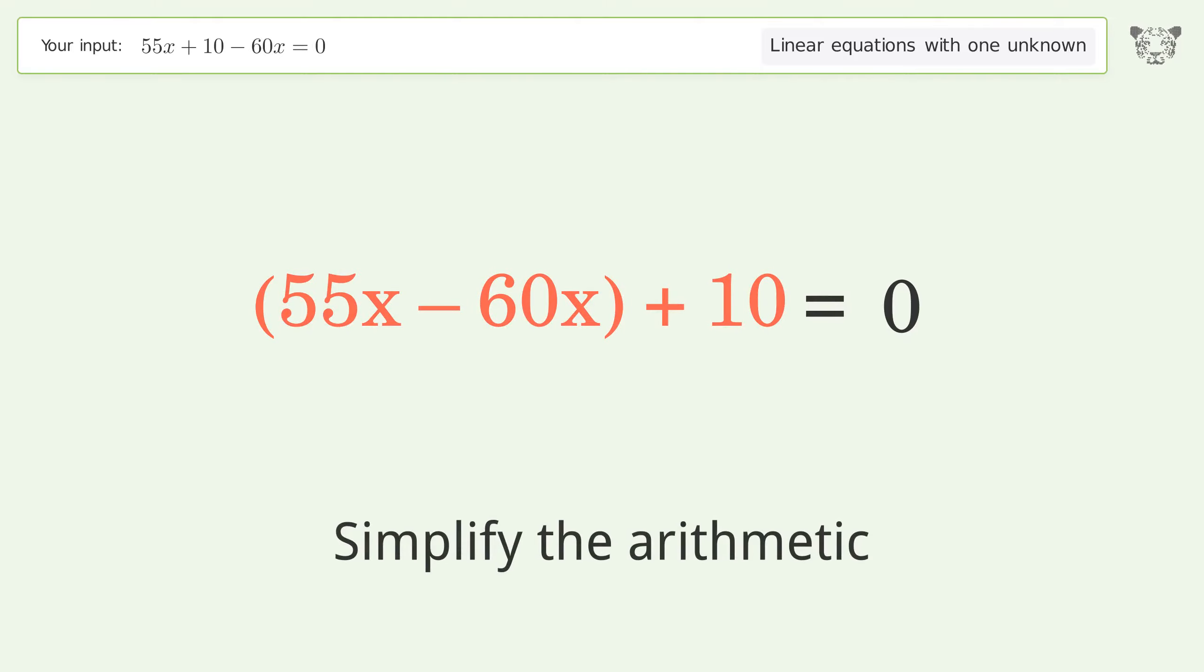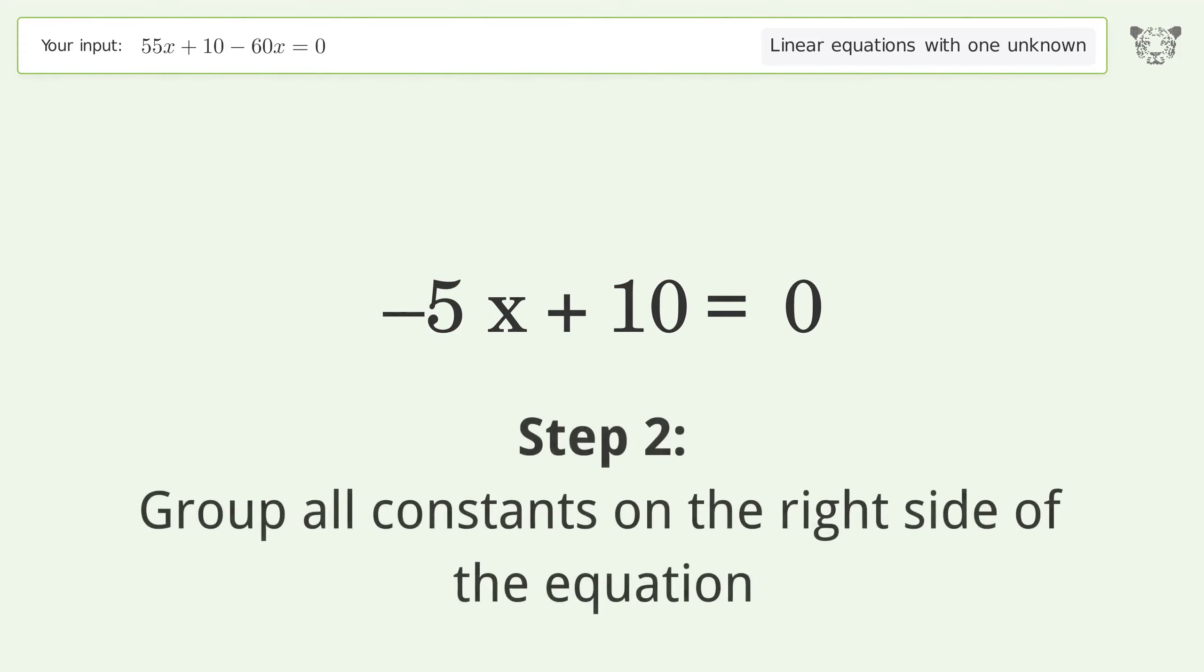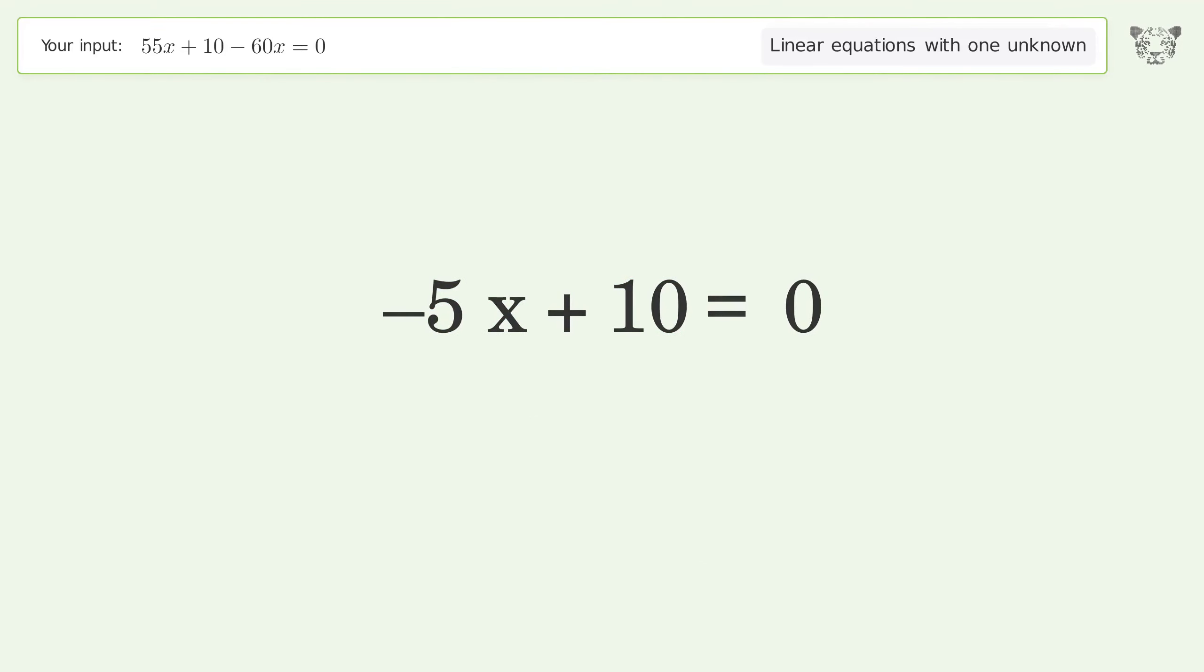Simplify the arithmetic. Group all constants on the right side of the equation. Subtract 10 from both sides. Simplify the arithmetic.